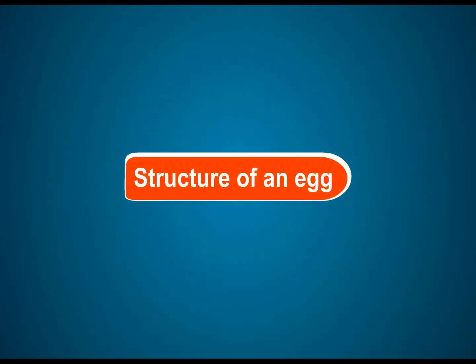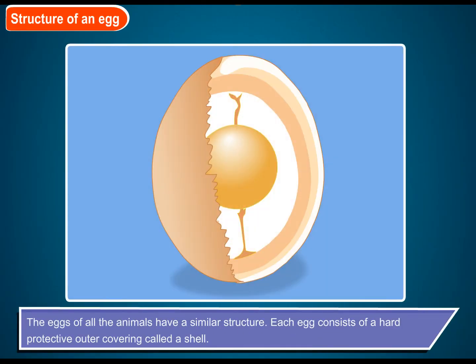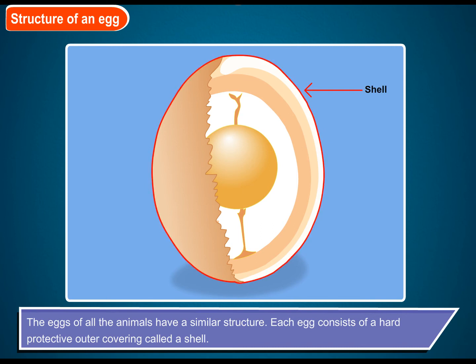Structure of an Egg. The eggs of all animals have a similar structure. Each egg consists of a hard protective outer covering called a shell.